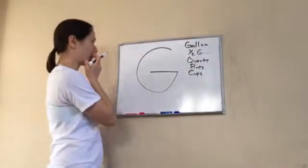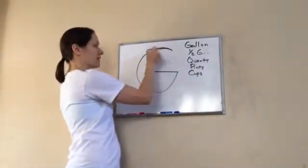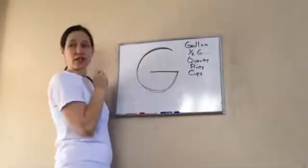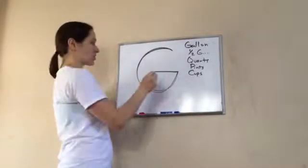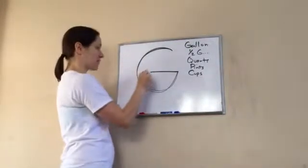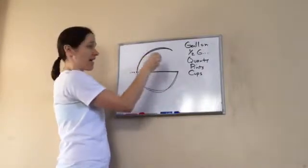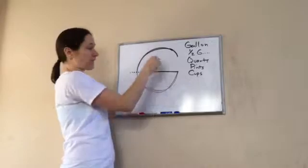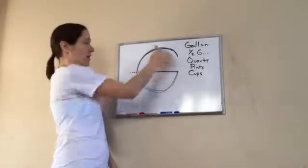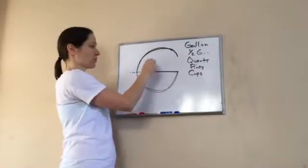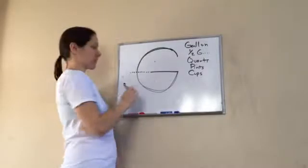So gallon, I'm going to use a G for gallon. And so to make a half gallon, I'm just going to put this little dotted line that shows me that it's divided in half. So how many half gallons are in one whole gallon? Two. Two, one, two, right? Very good.